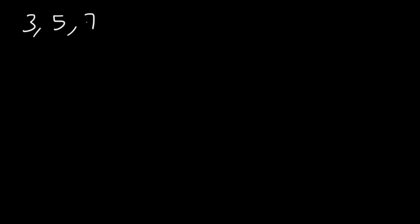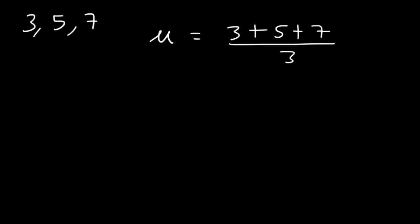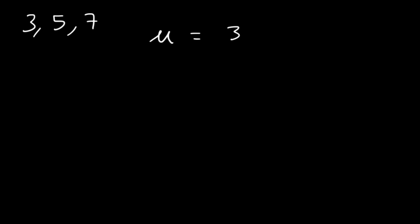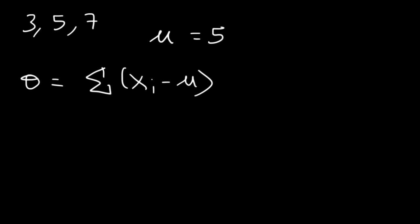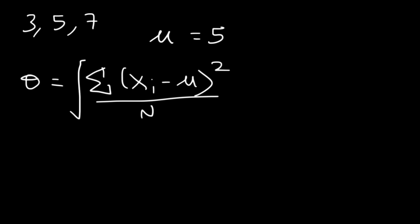Now let's calculate the population standard deviation for 3, 5, and 7. The first thing we should do is calculate the mean. To find the mean, it's the sum of all the numbers divided by 3. Because the three numbers are evenly spaced apart, the mean is the middle number, 5. 3 plus 5 is 8, 8 plus 7 is 15, and 15 divided by 3 is 5. Now, applying the formula: it's the square root of the sum of every point minus the mean, squared, divided by n.